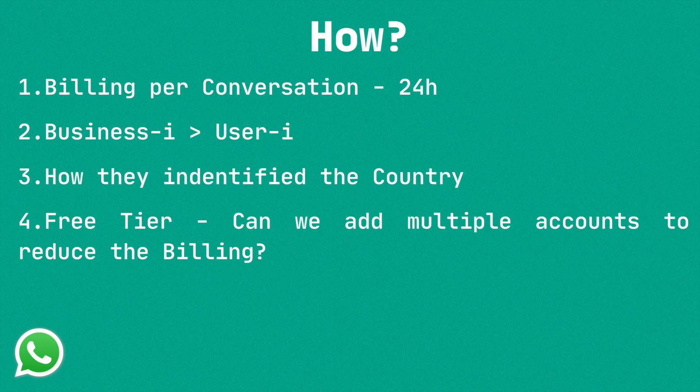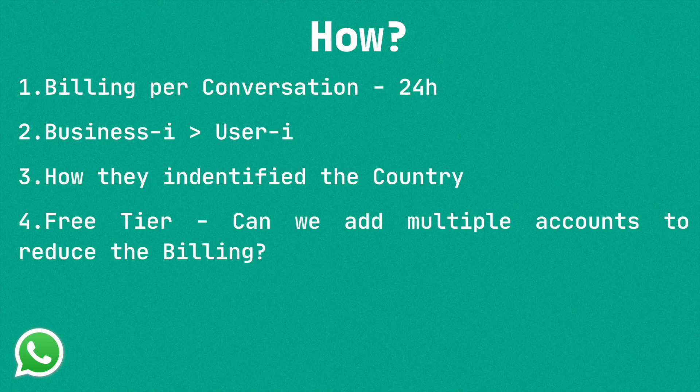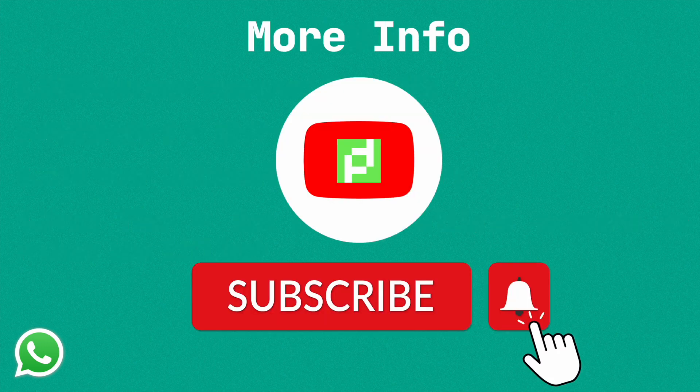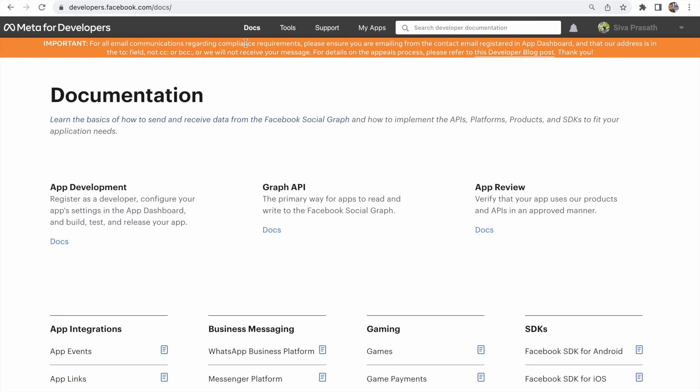The fourth point is the free tier. WhatsApp Cloud API provides 1,000 conversations per month — each month they provide 1,000 free conversations per WhatsApp Cloud API account. If it exceeds that, then we have to pay. Some people might think: can we add multiple accounts to reduce billing? Actually no — if you add two or three numbers, those conversations are all calculated together.